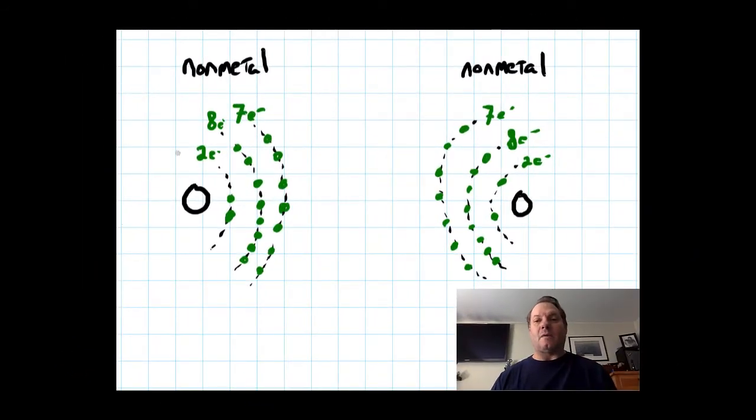So today we're going to talk about what happens when we bond non-metals to non-metals. So I've made a different type of diagram here showing two electrons in the first principal energy level, eight in the second, and seven in the third for both of these. And we know that non-metals want to fill their valence electrons by taking electrons from someone else. Non-metals love their electrons. So when I get a non-metal and non-metal together, what's going to happen is one non-metal is going to try to take the electron from the other non-metal.